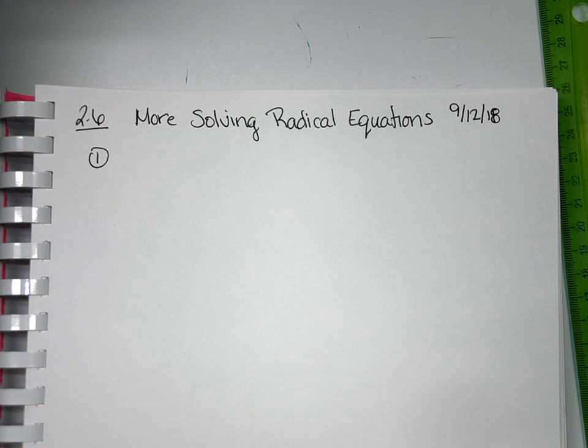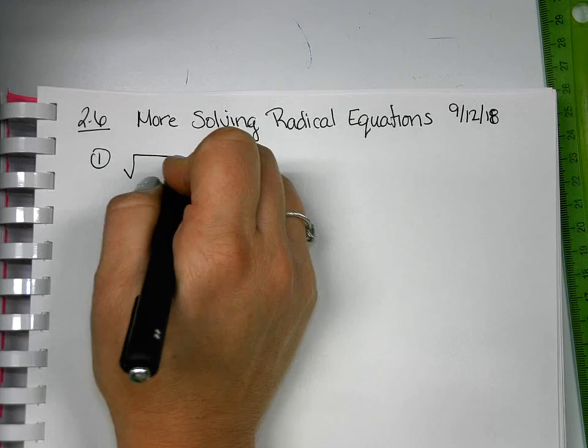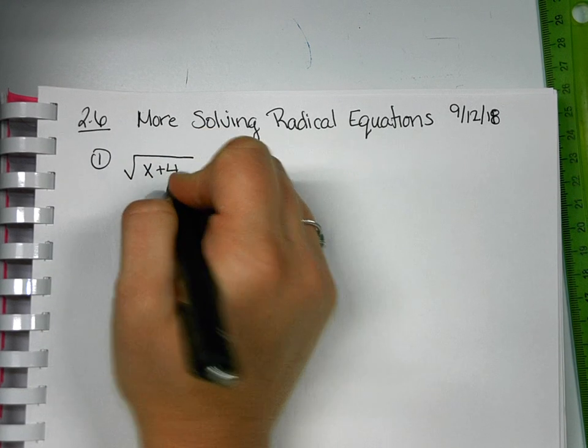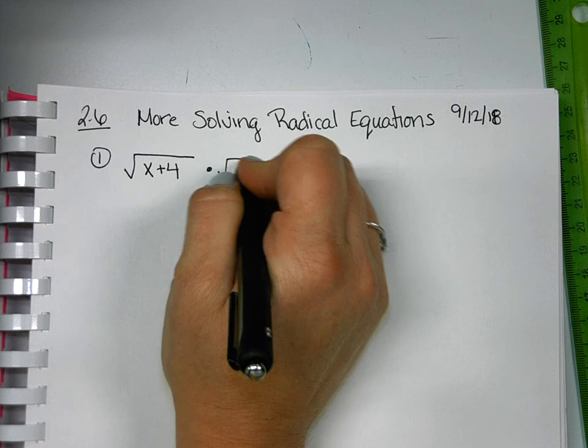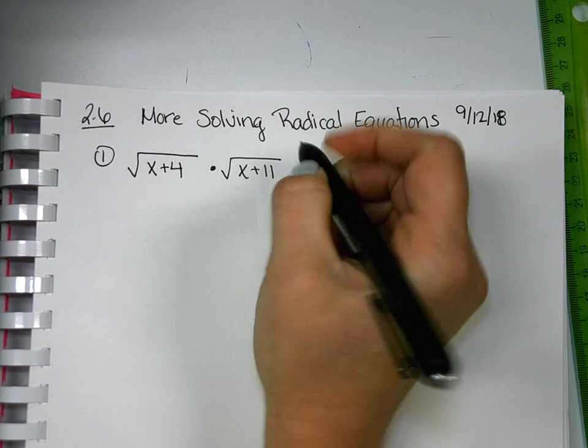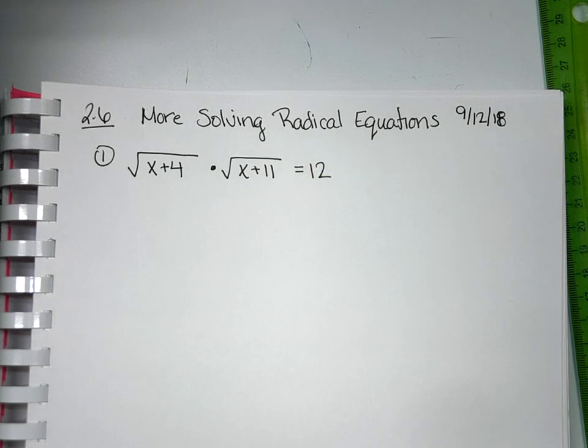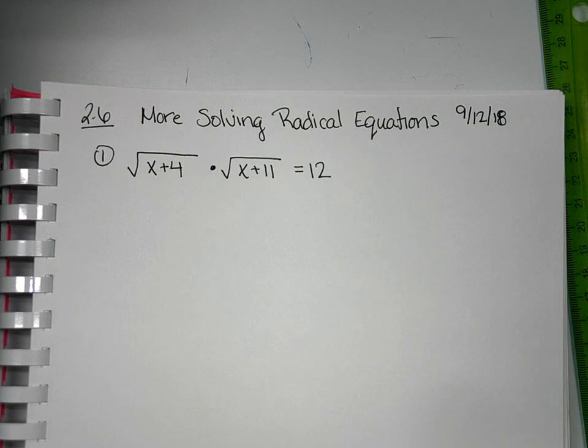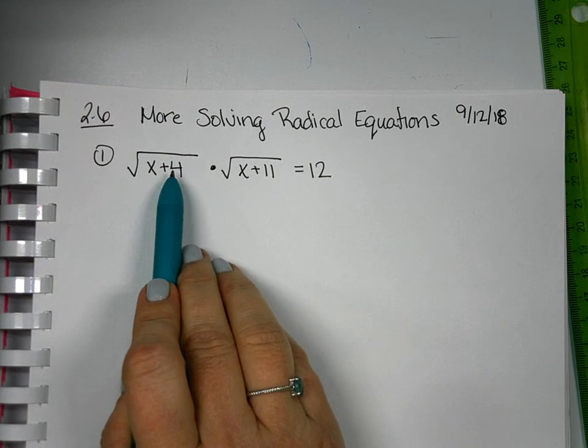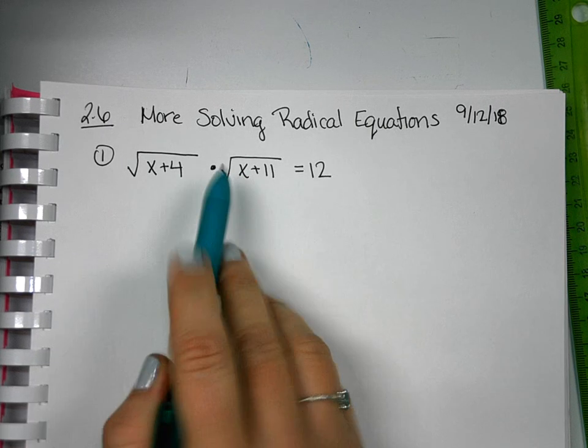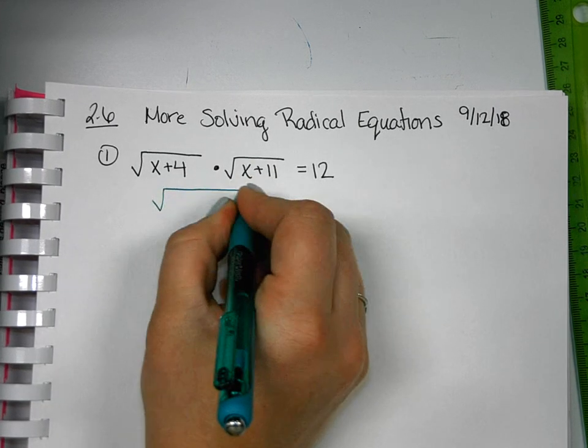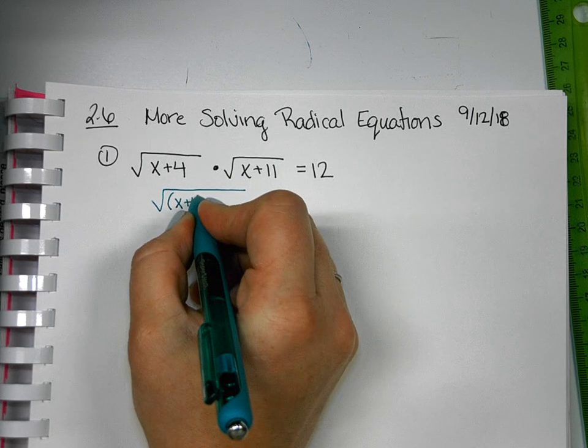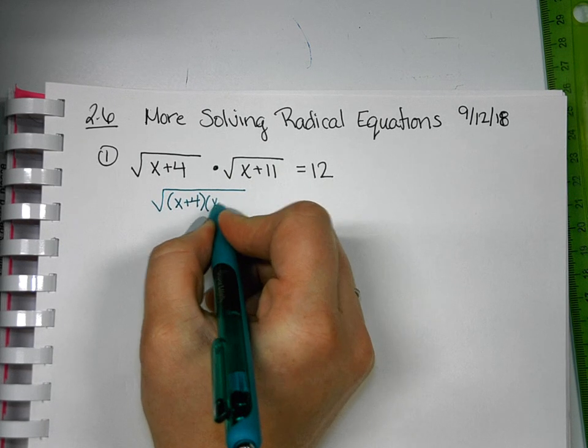The first one that's a little different involves two radicals being multiplied. What this one requires us to remember are some properties about radicals in multiplication. If we're multiplying two radicals together, we can combine them into one square root by multiplying together what's inside of them.